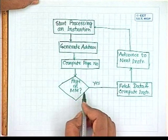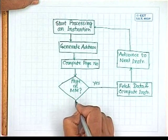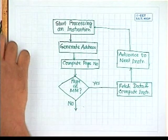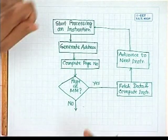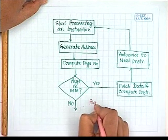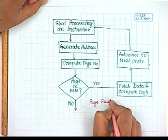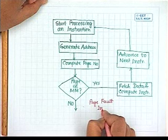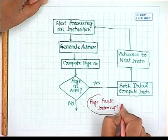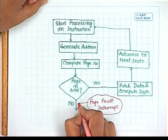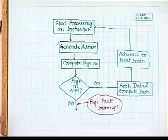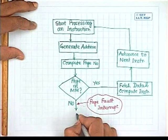In case the page is not available in the main memory, a page fault interrupt is generated. We must then examine what operations have to be performed when a page fault interrupt occurs.